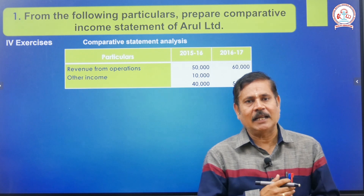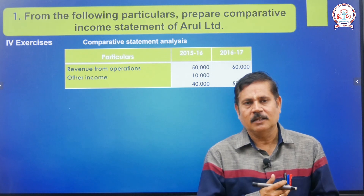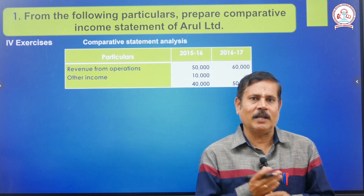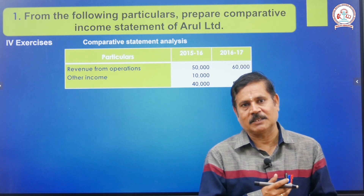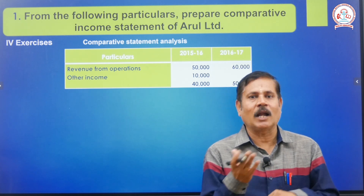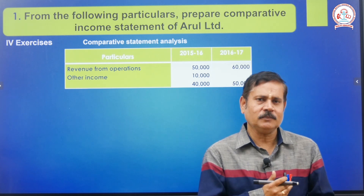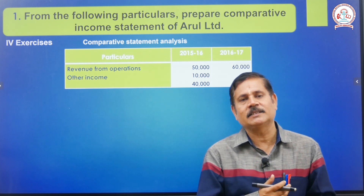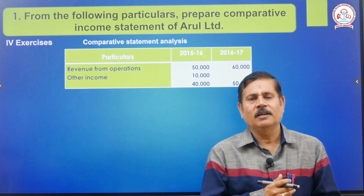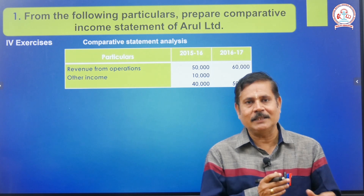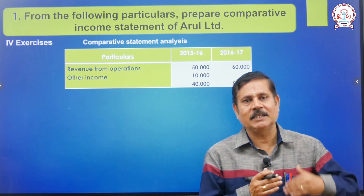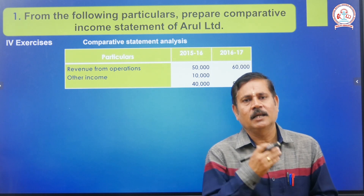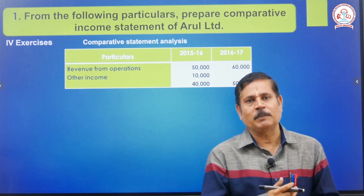Financial statement analysis has totally five tools. The first one is comparative statement analysis. What is meant by comparative statement analysis? We compare one year to another year — current year to previous year — and find the increase and decrease values. Based on that, we find out the percentage value: how many percent increase or decrease. That result is found through comparative statement analysis.